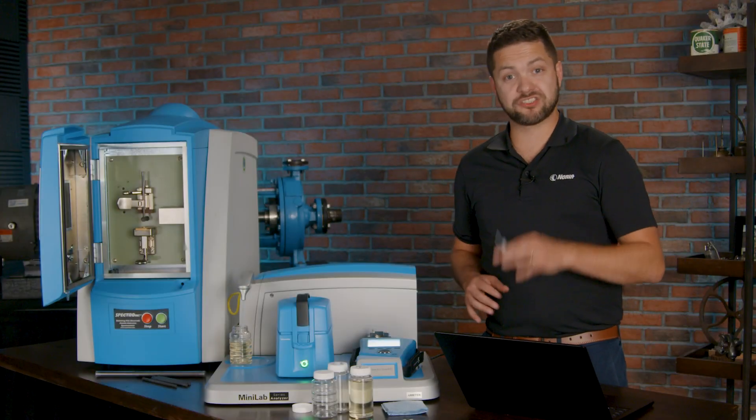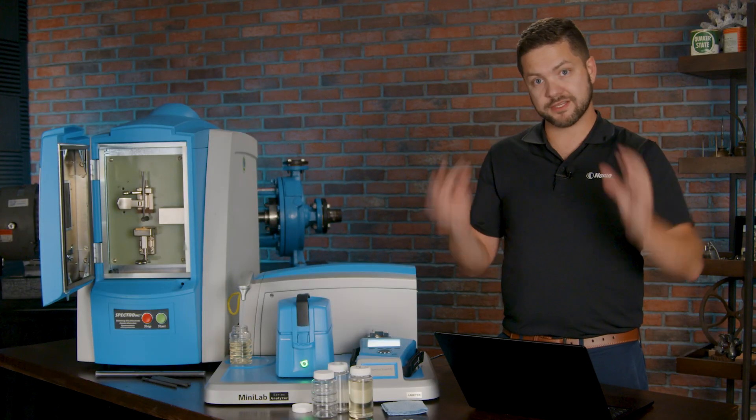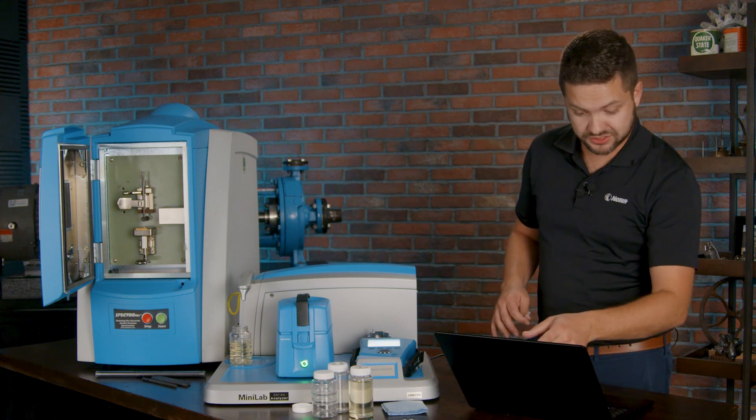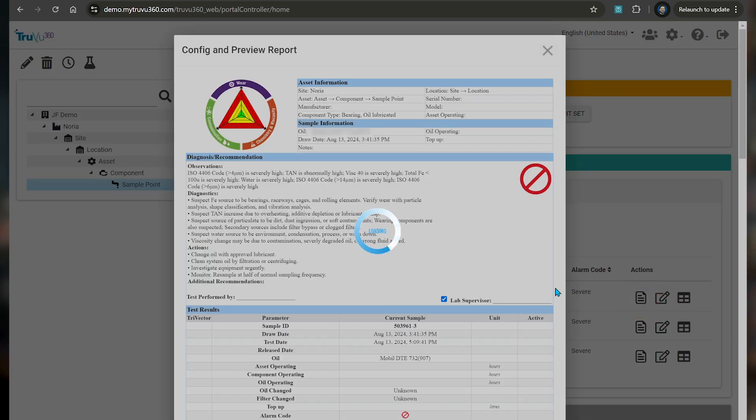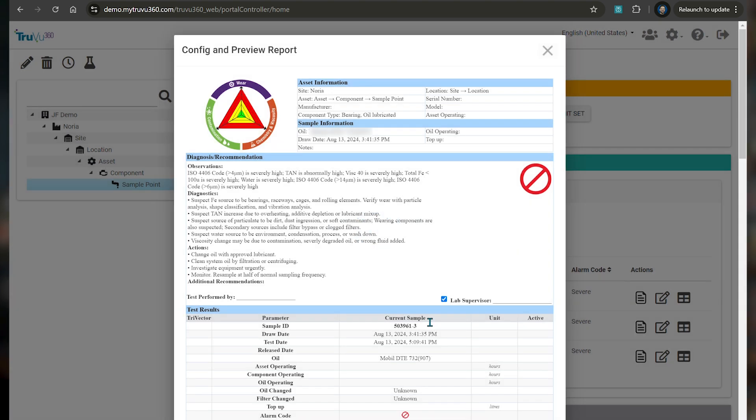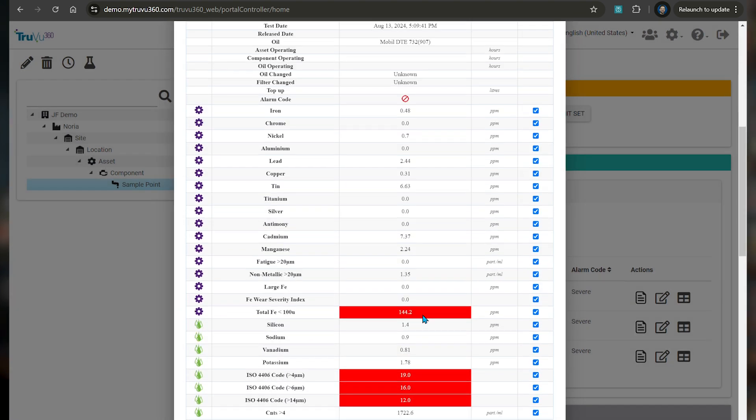Okay. So I just jumped into the TrueView 360 software where the data comes together. At this point, really, it's just going to the sample point where this oil came from. So you can see the hierarchy on the left. And at pre-diagnostics, you can click on the sample. It's going to pull up the report. You'll see all the data you need with the observations, the diagnostics, the actions, recommended actions.